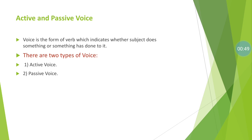So what is active voice and what is passive voice? Voice is the form of verb which indicates whether the subject does something or something has been done to it. There are two types of voice. In active voice, the subject does the action. In passive voice, the action has been done by the subject — meaning a third person is doing the action through the subject.